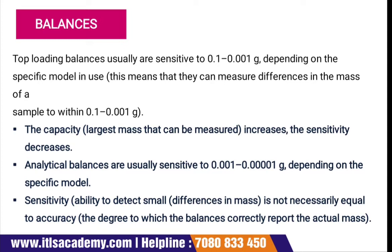Now comes the balance. Top loading balances are usually sensitive to 0.1 to 0.001 grams depending on the specific model in use — meaning they can measure differences in mass of a sample to within 0.1 to 0.001 grams. As the capacity, that is the largest mass that can be measured, increases, the sensitivity decreases. Analytical balances are usually sensitive to 0.001 to 0.0001 grams depending on the specific model.